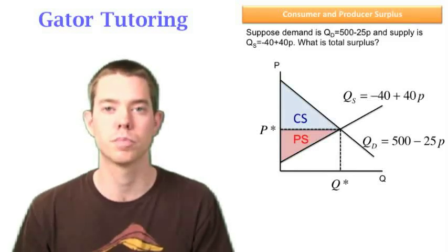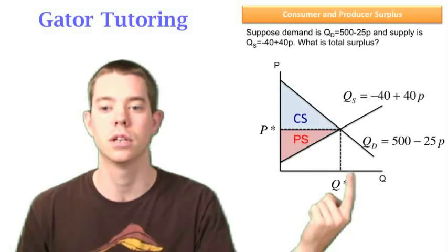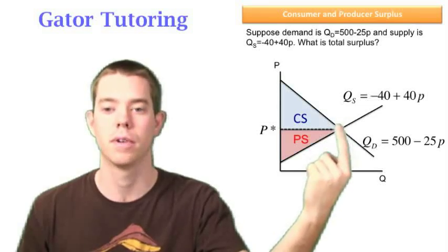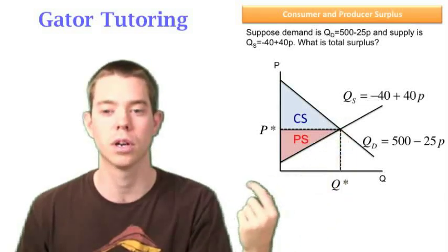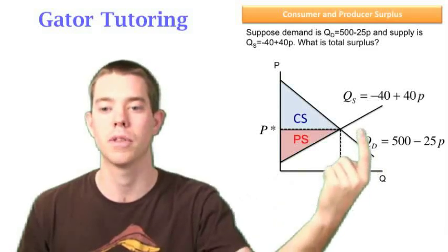We see that we don't produce past Q star, because if we produce past Q star, let's say this unit, well then it costs way up here, and we actually get only price for it. And likewise, the value is way down here, and we have to pay more than it.